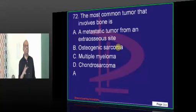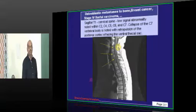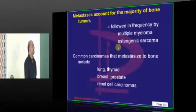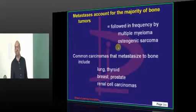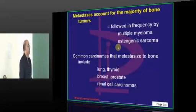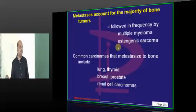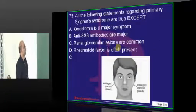Metastasis is the most common tumor that involves bone. Following that, other causes include osteogenic sarcoma, multiple myeloma, and others. The common carcinomas that metastasize to bone are lung, thyroid, breast, and prostate — and you must know which are osteoblastic and which are osteoclastic.